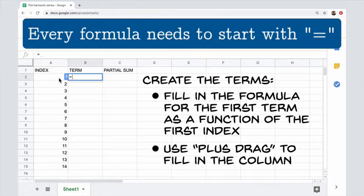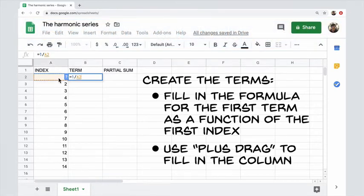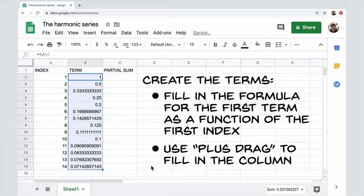We know that the terms here are the reciprocals of the index. So this first term should be 1 divided by, and then we'll put in a reference to the first index. So it's 1 divided by a2 in this case. Now we're going to drag that down using the plus drag option. And you can see that the references were updated properly right on down.